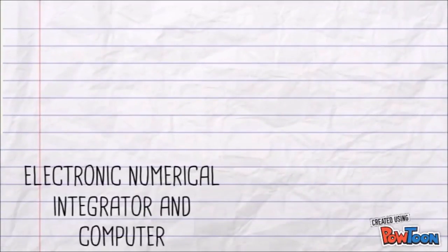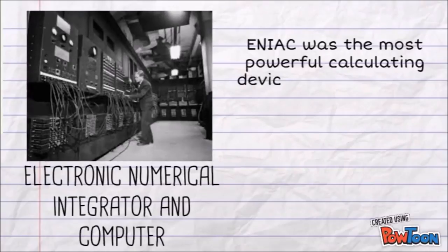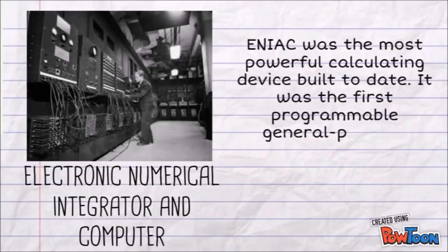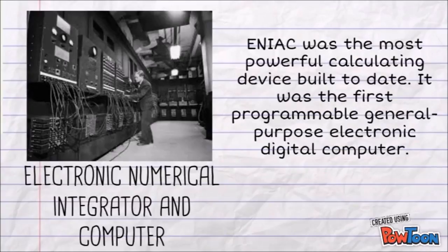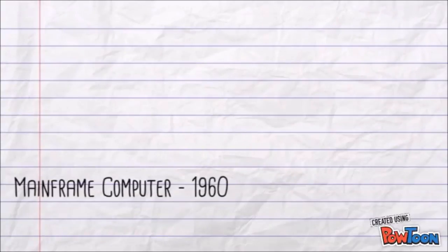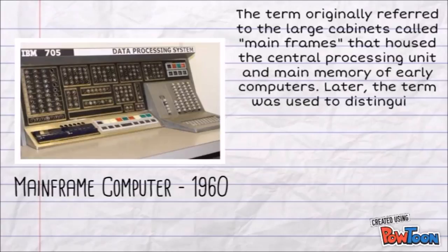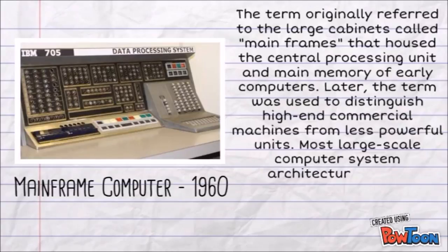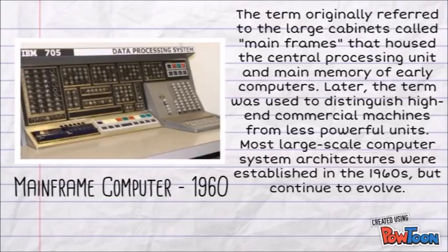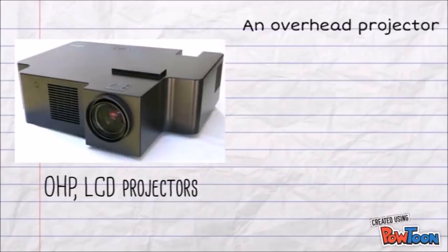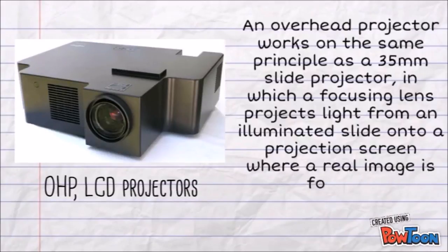We have the ENIAC — Electronic Numerical Integrator and Computer — the first programmable general-purpose electronic digital computer, built during World War II by the United States. Then came the Mainframe Computer in the 1960s — colloquially referred to as Big Iron — used primarily by large organizations for critical applications. Lastly, the OHP LCD projector is a variant of slide projector used to display images to an audience, often abbreviated as OHP.